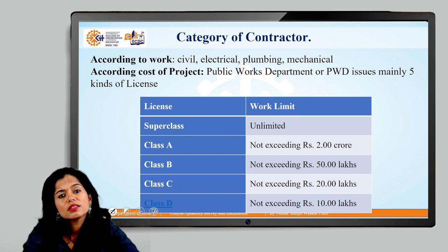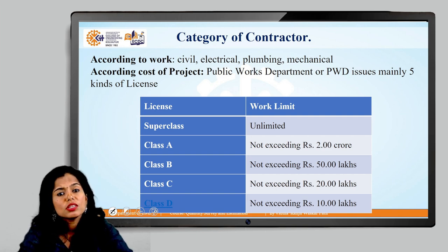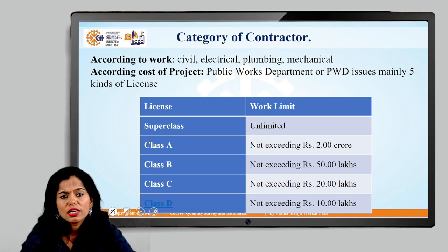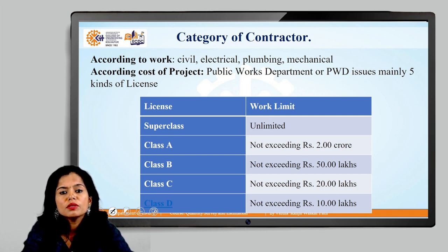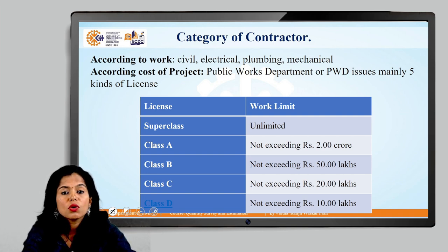Another aspect of this contract is the category of contractors and how they are differentiated. This category is classified as: Superclass, where the amount of work is unlimited; Class A, not exceeding 2 crores of rupees; Class B, not exceeding 50 lakhs rupees; Class C, not exceeding 20 lakhs; and Class D, not exceeding 10 lakhs. This classification is further divided according to the type of work — civil, electrical, plumbing, or mechanical — and these figures are according to the PWD department, which issues licenses to contractors on this basis.